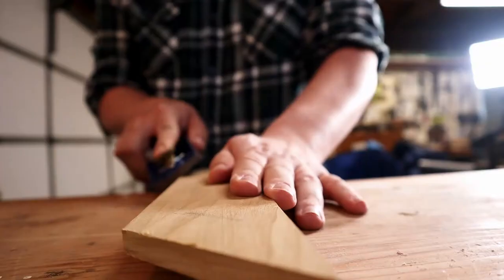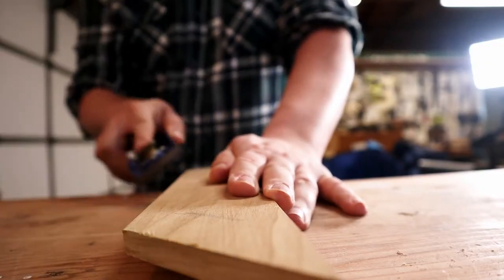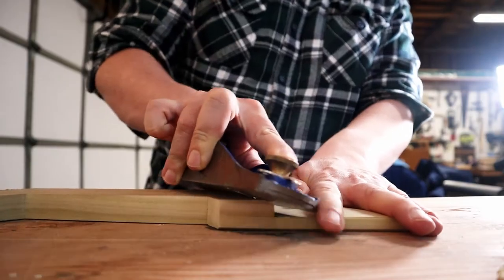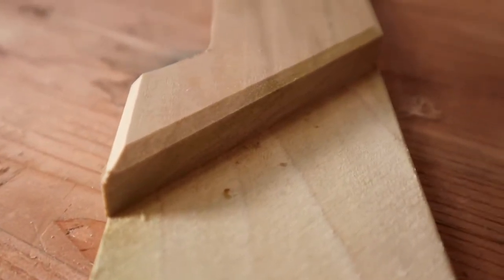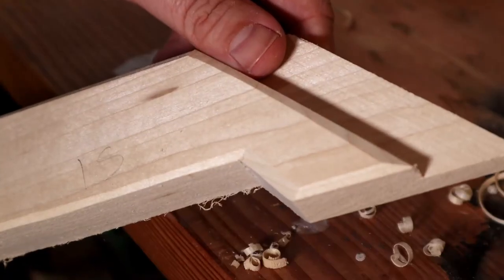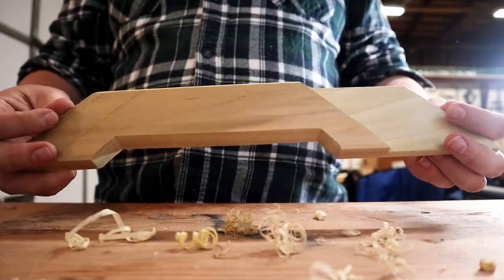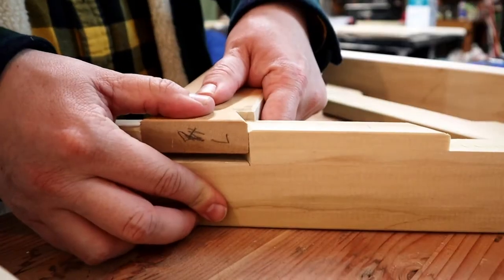I'm a big fan of chamfering edges of joinery. That's the part where I'm knocking off the corners. That helps to highlight the joints and, in my humble opinion, the skill and effort that goes into making them. Maybe it's a weird flex, but hey, it makes me happy so I'm gonna go with it.